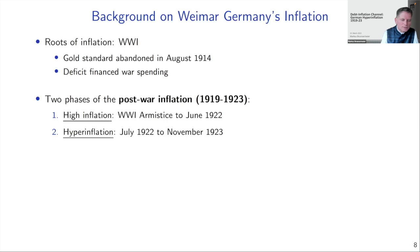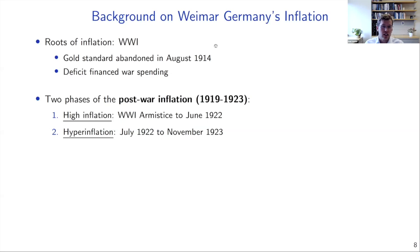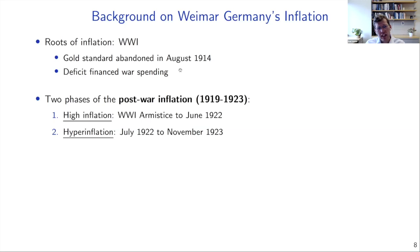Let me provide historical background. The roots of Weimar Germany's inflation lie in World War One. Germany abandoned the gold standard in August 1914 and financed war spending through deficits, relying more on domestic loan issuance than external bond issuance compared to, say, the UK. Interestingly, inflation in Germany during World War One was not much larger than in the UK or France. The divergence really happened in the post-war period starting in 1919.